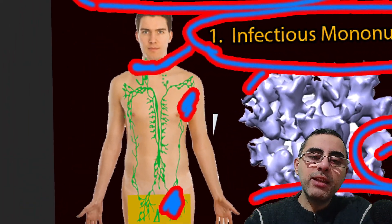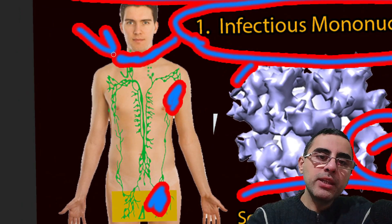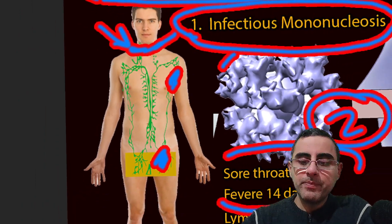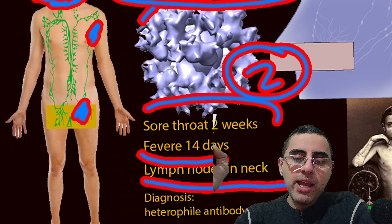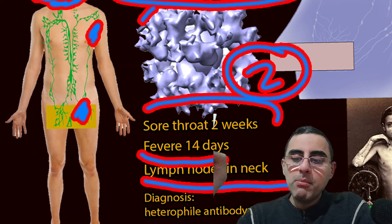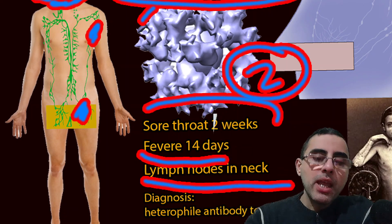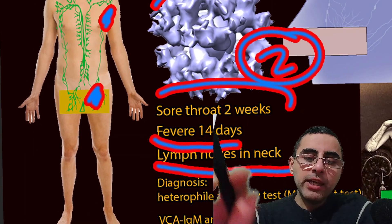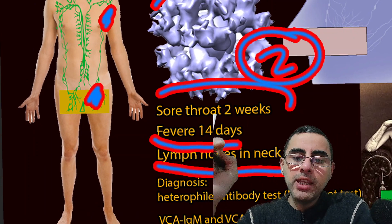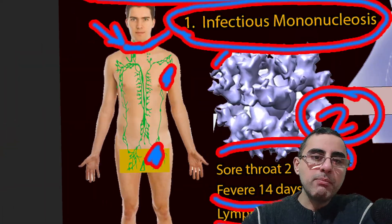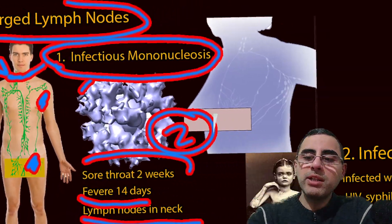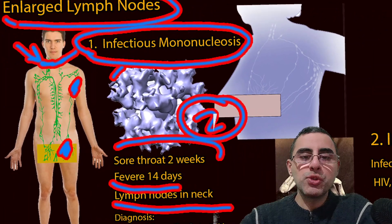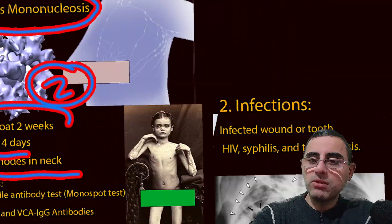Sometimes lymph nodes are painless but still enlarged, especially in the neck region. Diagnosis is made by antibody test requiring blood tests — monospot tests — and VCA IgM and VCA IgG antibodies are measured to make the diagnosis. Infectious mononucleosis treatment is usually supportive; there is no specific treatment.